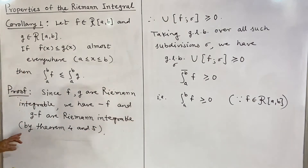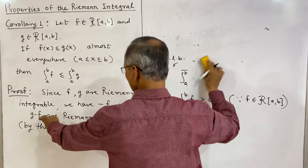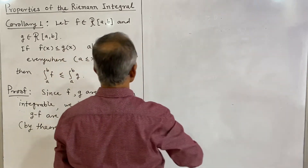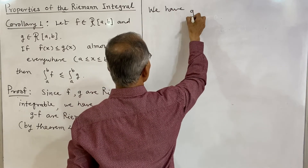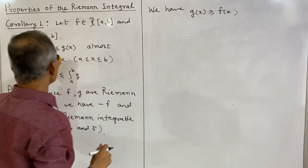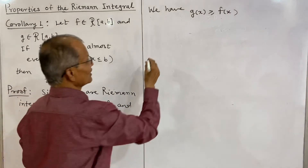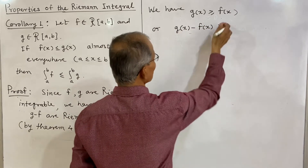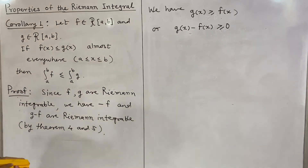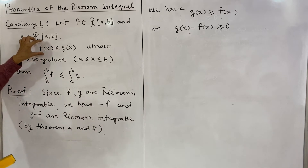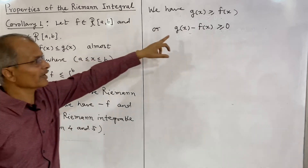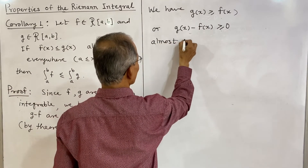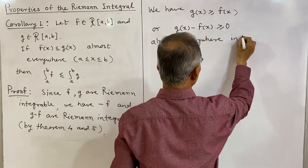So g minus f is Riemann integrable. We have given f(x) ≤ g(x), which means g(x) ≥ f(x), and therefore g(x) − f(x) ≥ 0 for all x. That means f(x) ≤ g(x) implies g(x) − f(x) ≥ 0 almost everywhere in the closed interval [a, b].